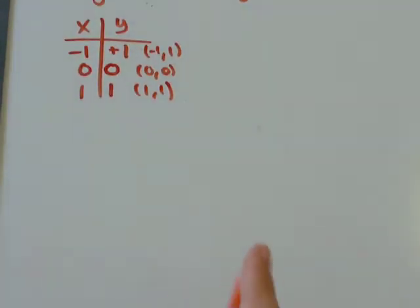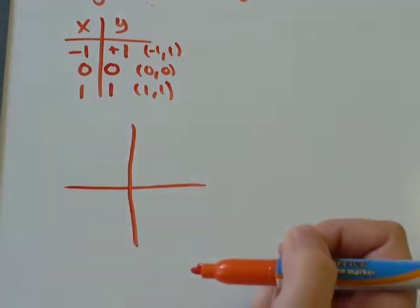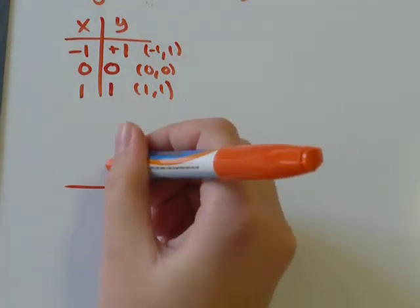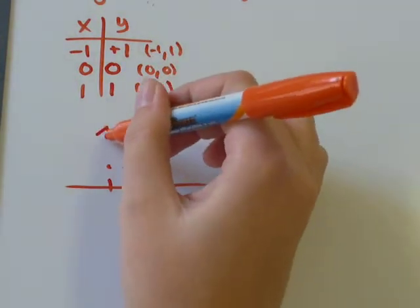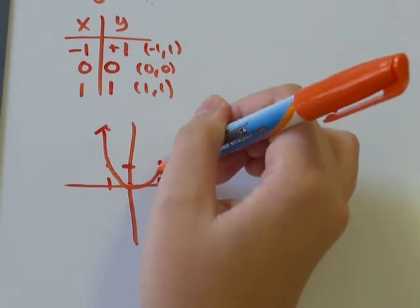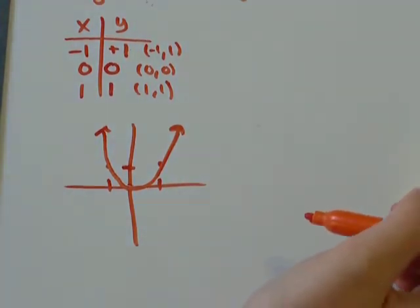I need to draw myself a little graph. And negative 1, 1 would be there. 0, 0, and positive 1, positive 1. Connect the dots in a smooth curve. And you get something that looks like that. Just our basic parabola.